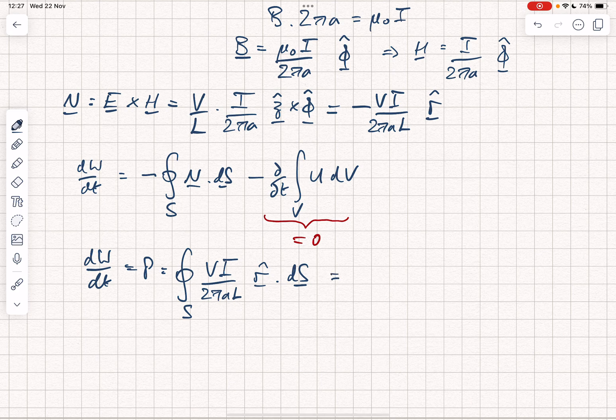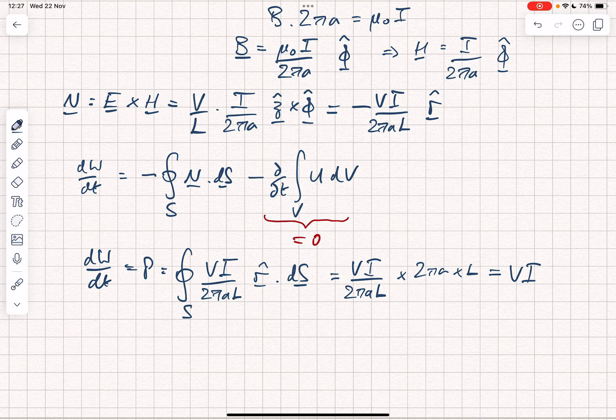And the Poynting vector is constant. So what we find is that we have VI over 2 pi A L multiplied by the surface area. Now, the surface area of the outside curved surfaces of a cylinder is the circumference 2 pi A times L. And therefore, once again, we get that P is equal to VI.